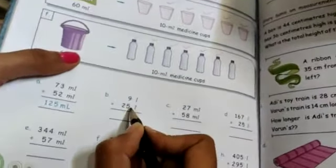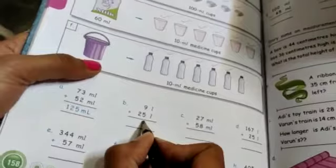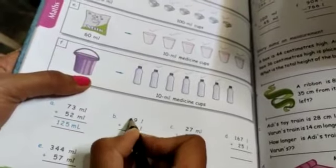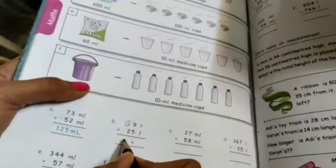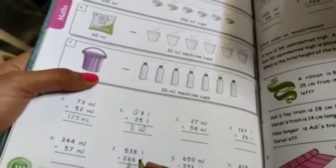See, 9 plus 5, how much? 14. 4, carry 1. 2 plus 1, 3 liters. 34 liters. Like that only you have to do.